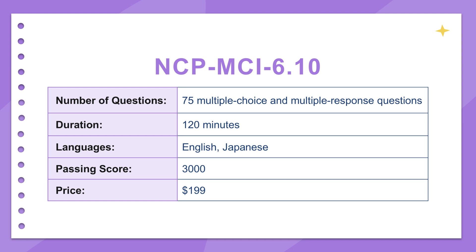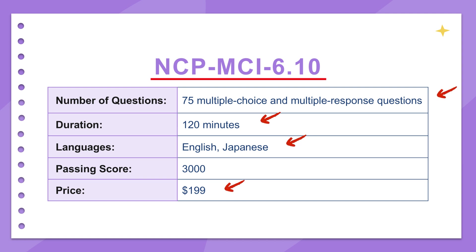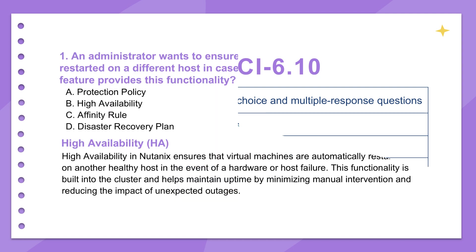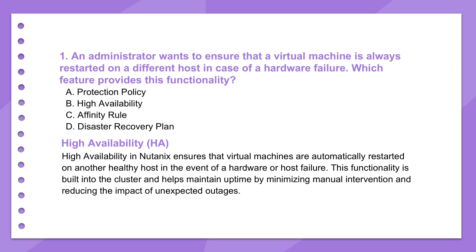Just for context, the material mentions the NCP MCI 6.10 exam: 75 questions, multiple choice, 120 minutes, available in English and Japanese, costing about $199. But the logistics aren't the point for us today. It's what those questions imply about the technology that's interesting. So instead of just a feature list, let's look at the problems these concepts solve — the scenarios the questions show us about how things fit together.